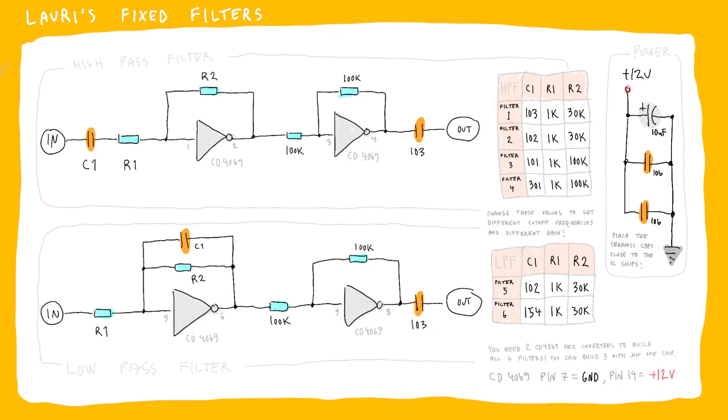Here are the schematics for the filters, so it's based around the CD4069 hex inverter, so that's why we have six filters in the module, because we're using all six of the inverters. You can change the values of the components to get different cutoff frequencies or different gains. You should play with the component values and see what works for you.